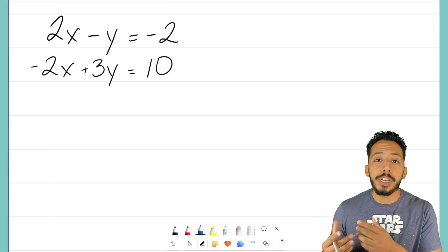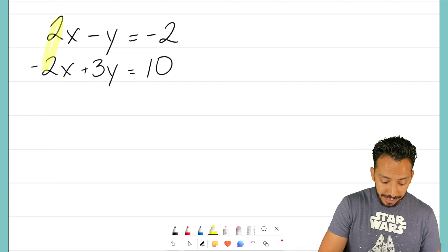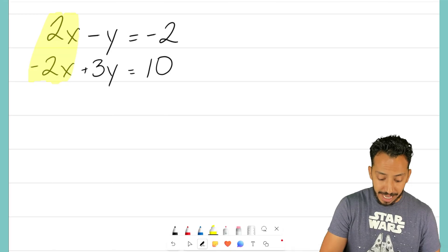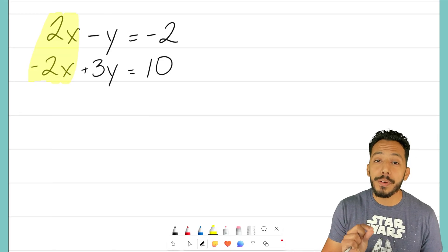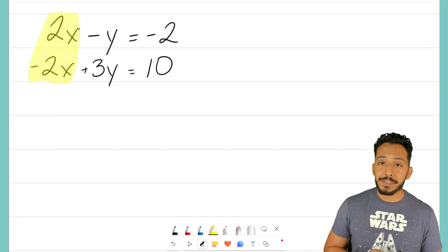For this, we want to use the elimination method, and here's why I want to use the elimination method. Look at our x variables, and more importantly, the coefficients of those x variables. One is a positive 2, the other is a negative 2.